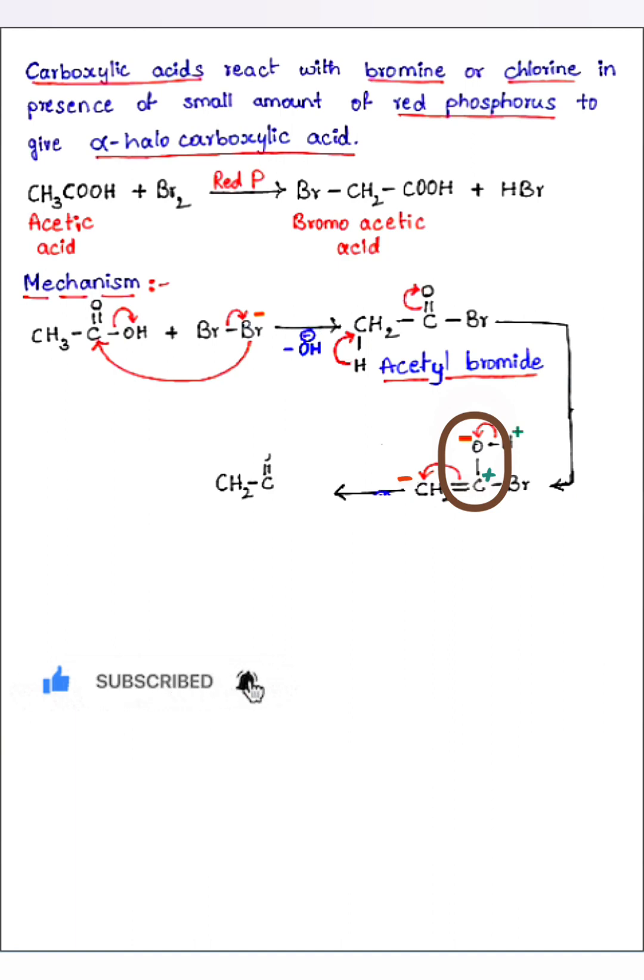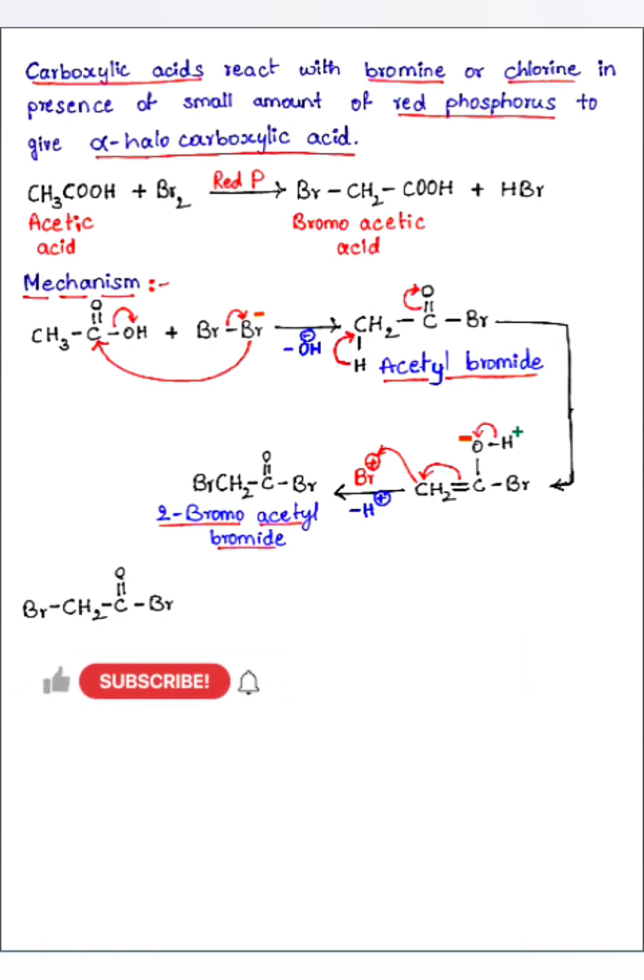See double bond O and this hydrogen, that is I am removing this hydrogen in the form of H+. H+ is coming out. Now you can see this CH2- is reacting with this Br+ and forming CH2Br bond. So that is nothing but 2-bromo acetyl bromide.